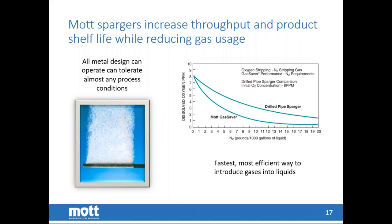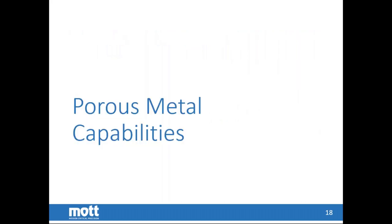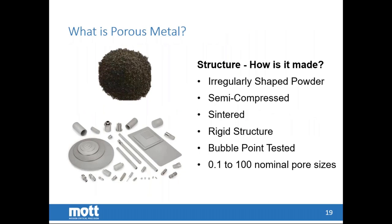Sparging is popular in food and beverage, cell culture, biotech, pharmaceutical, and certain oil and gas industries. Mott has been manufacturing porous metal for 60 years, giving us considerable knowledge on how to manufacture it, its applications, and its versatility.